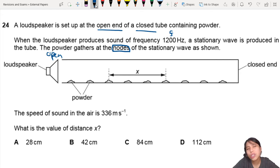You ever wonder why? Because at the nodes, there is no disturbance in the air. There's zero amplitude. So the powder will collect there. Everywhere else, the powder will fly everywhere and get displaced.